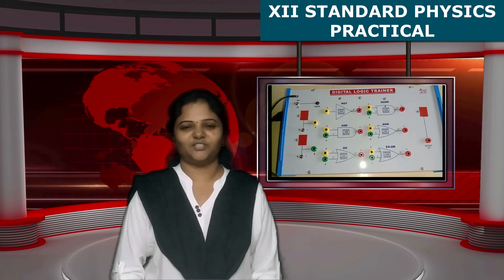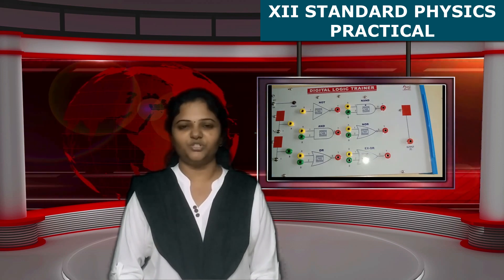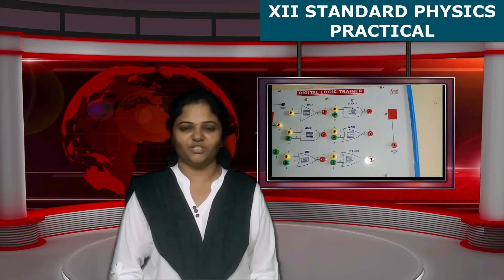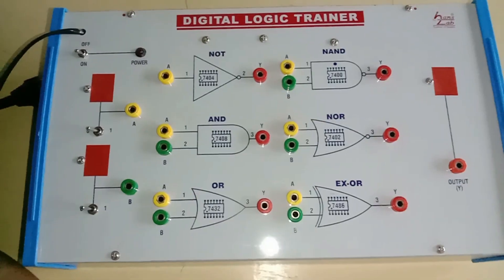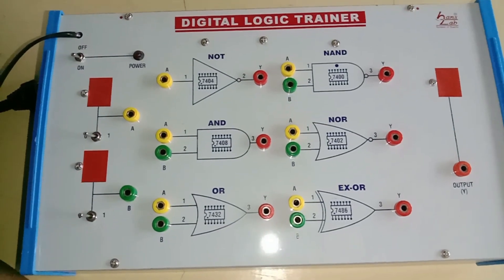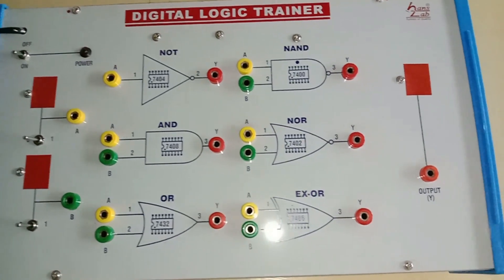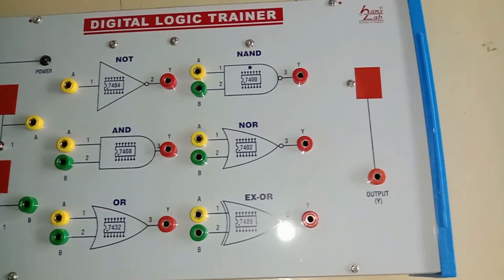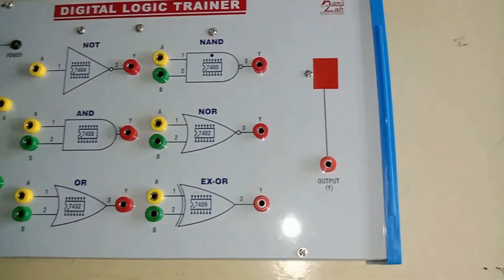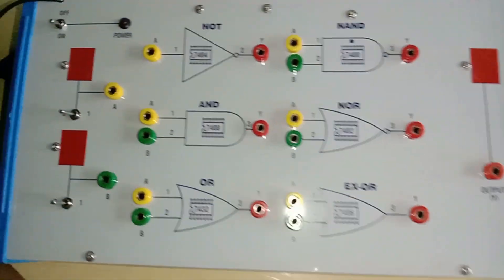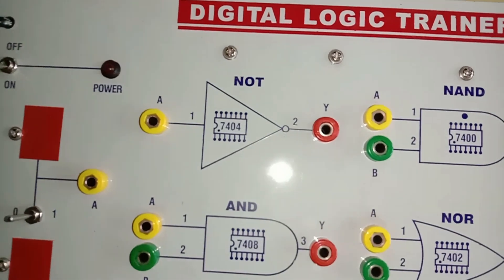The first experiment is verification of truth tables of logic gates using integrated circuits. The apparatus required is a digital logic trainer. Using this only, we are going to verify the truth table of logic gates.